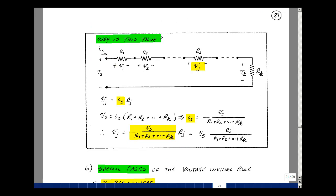Now, why is this true? Well, again, let's take these k elements in series, and if a voltage V is applied, a current I sub s flows, and the voltage across the jth element is the series current I sub s times R sub j.